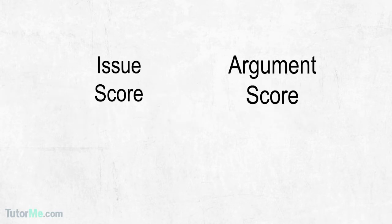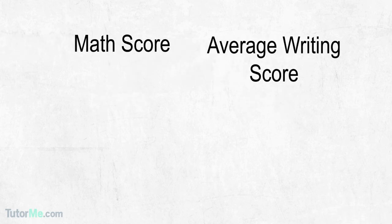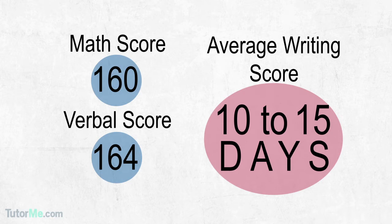Your issue and argument scores are combined into one average score that is reported to colleges. Although you can view your math and verbal scores at the test center shortly after you complete the test, your writing score will not be available until 10 to 15 days after the test.